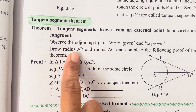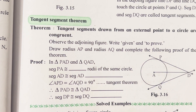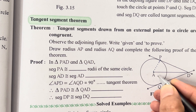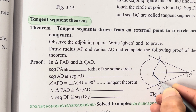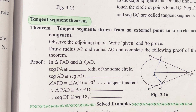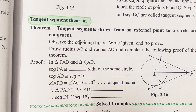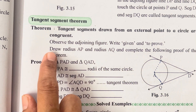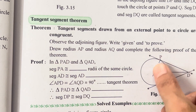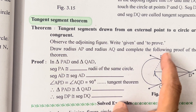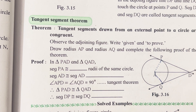Now for the construction: construct radius AP. You have to join AP with a dotted line, and similarly join AQ. So draw AP and AQ such that they join the tangent to the circle at points P and Q respectively. This is the construction you have to show — these are the radii of the circle.